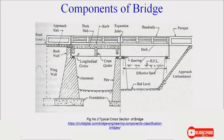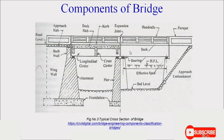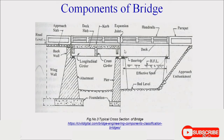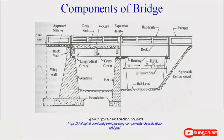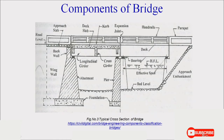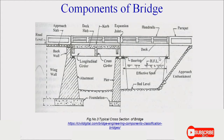Piers are nothing but the columns of the bridge, and they come under the substructure. The effective span of the bridge is the center-to-center distance between two piers. Bearings are provided to reduce vibrations due to vehicle traffic and to reduce stresses on the deck slab. Deck slab is the road surface of the bridge. HFL stands for High Flood Level — it indicates the maximum level of water that can rise during a flood, used for precautions in rainy seasons.